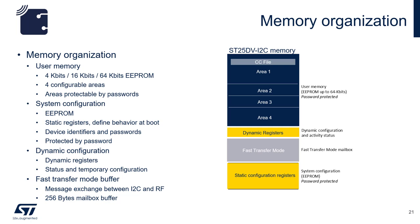Section 1 is the user memory with four configuration areas that can be protected by 64-bit passwords. Section 2 contains all the system configurations in EEPROM — static registers that define boot behavior, device identifiers, and passwords. Remember that access to system configuration requires passwords.